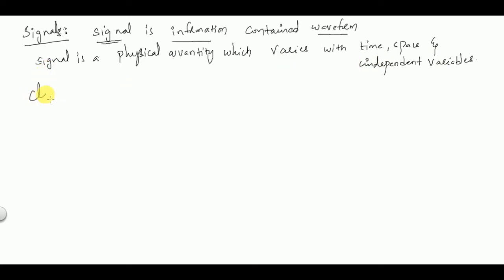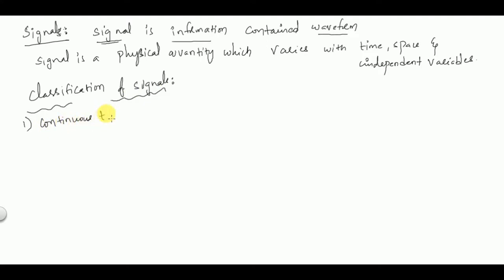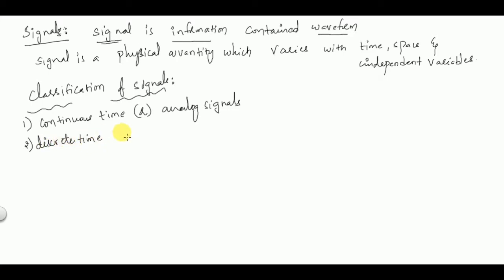Classification of signals — the broad classification of signals is of three types: one is continuous time signals, also called analog signals; second is discrete time signals; and the third classification is digital signals.